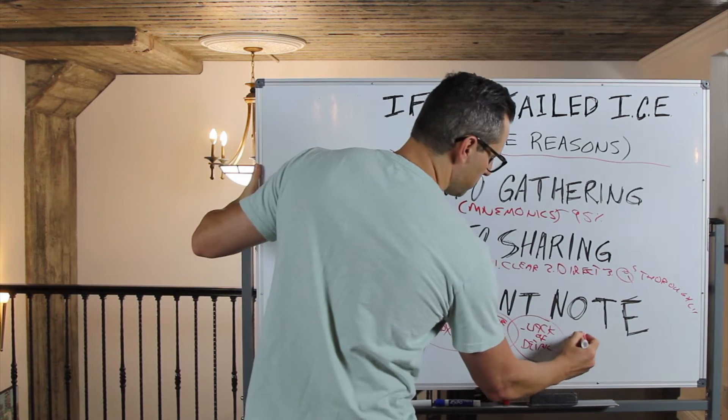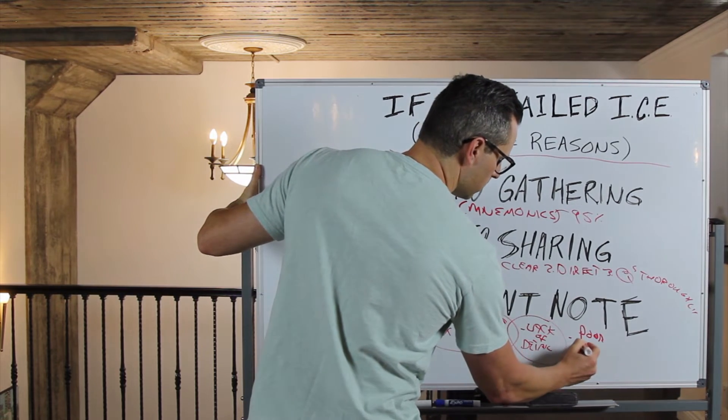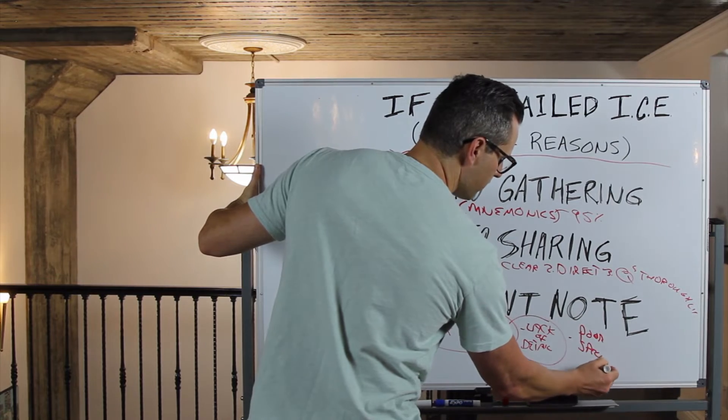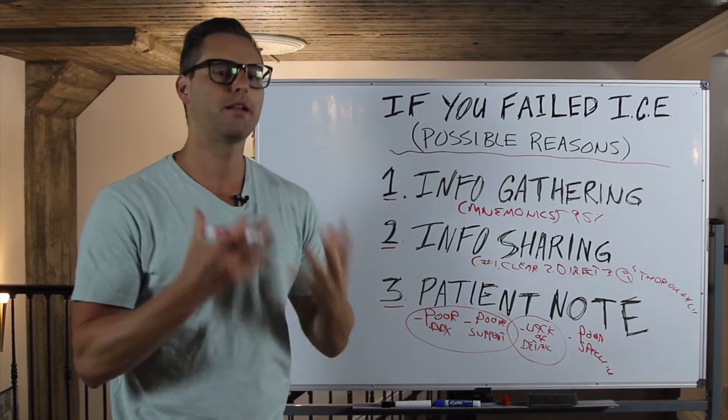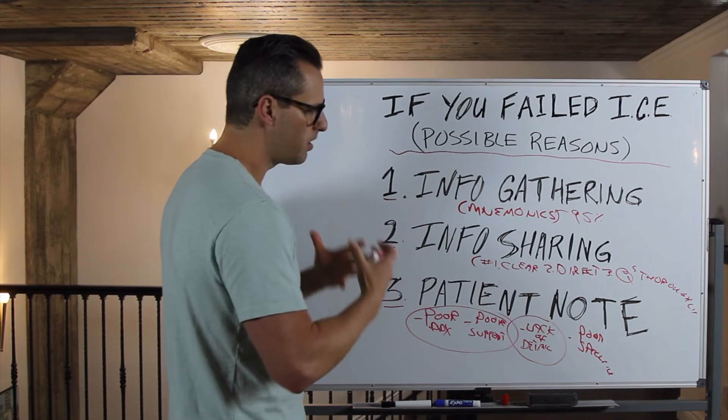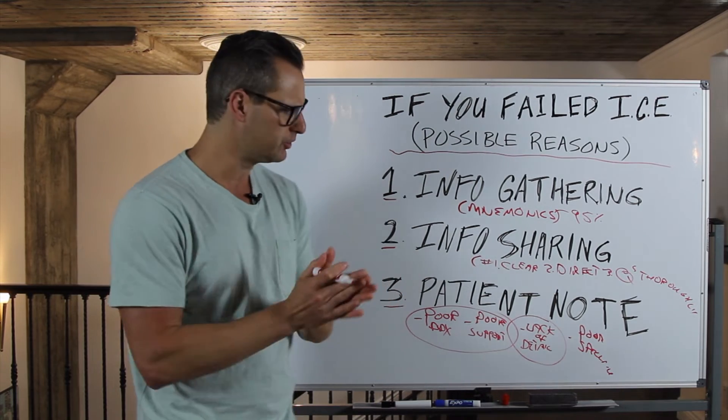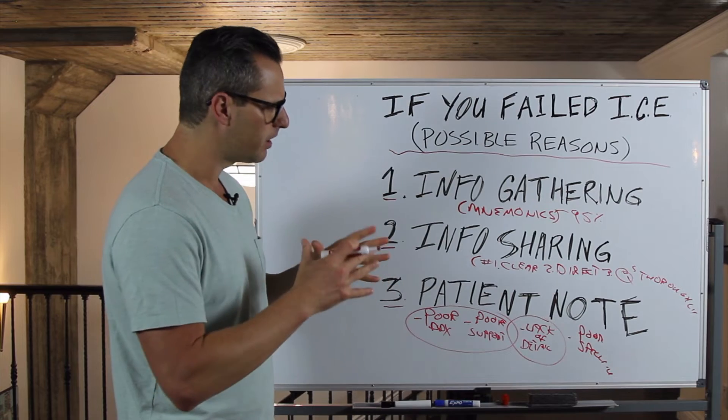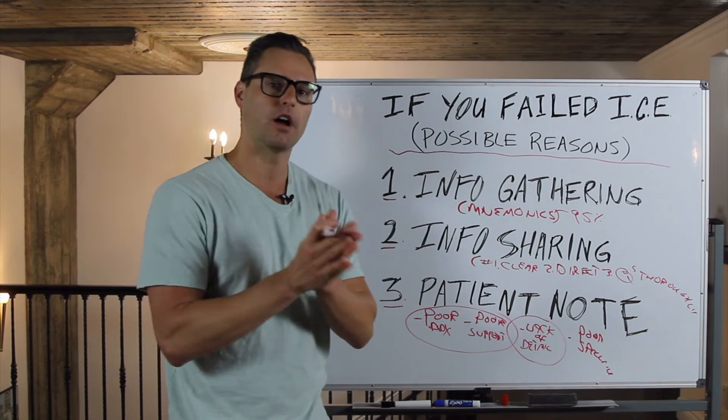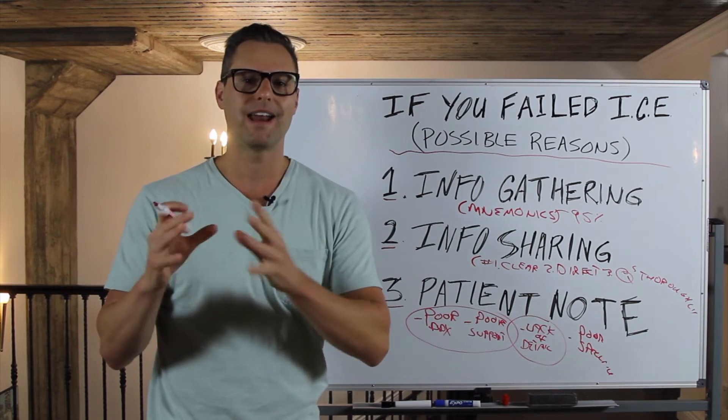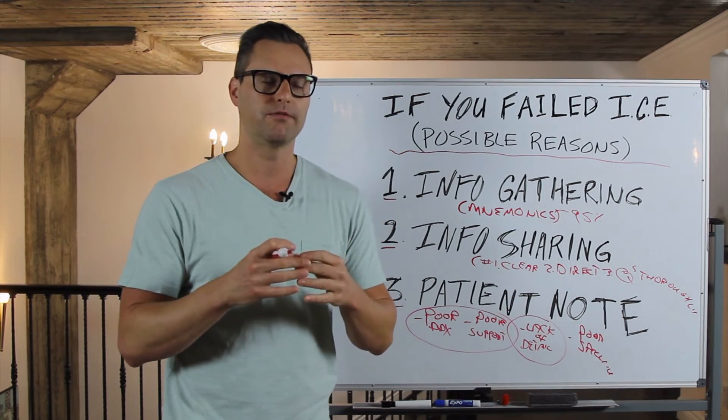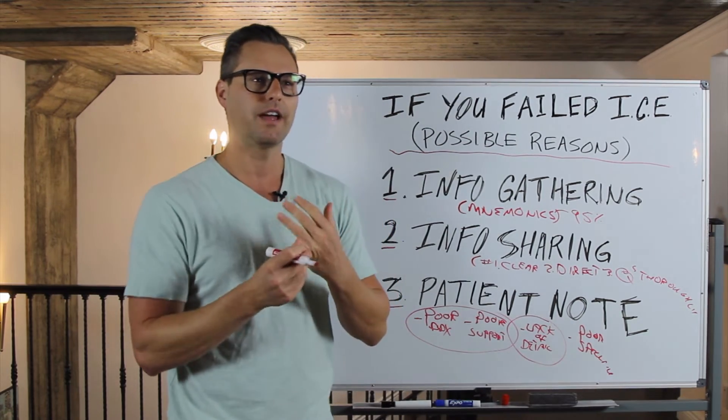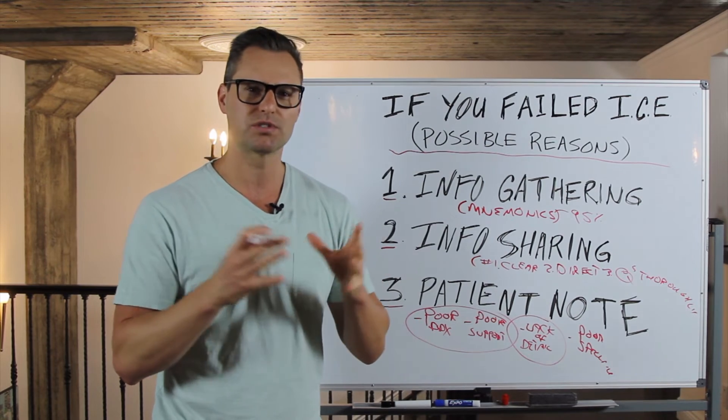Another one is just poor spelling and grammar. You can't have a note riddled with errors. It takes credibility away from you as the person documenting the information. So if you're properly documenting, but there's spelling errors and grammatical errors everywhere, it sort of pulls the credibility from you because the person reading thinks, okay, there's details here, but everything is so sloppy and misspelled.